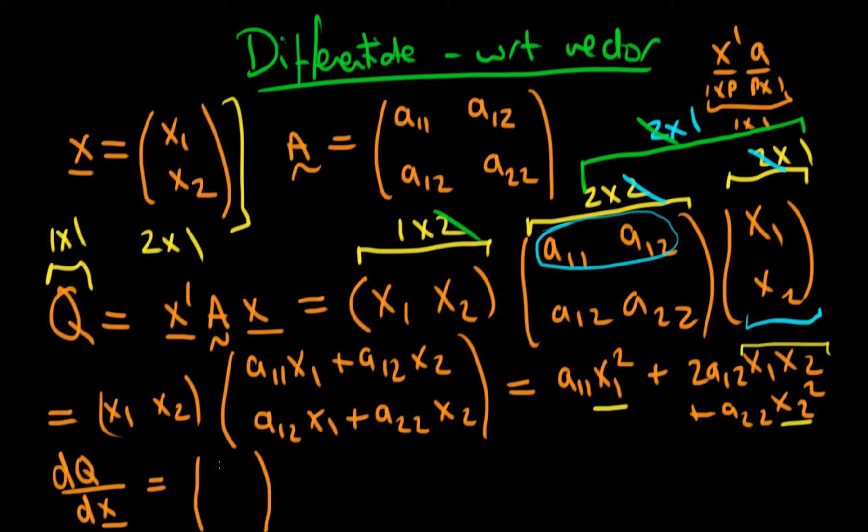With the two components being, well, the top component is going to be dQ over dx1, and the second component is going to be dQ over dx2.